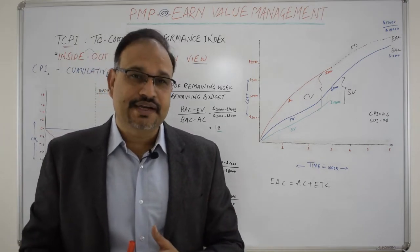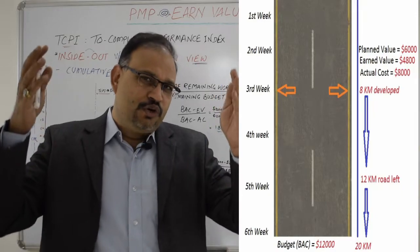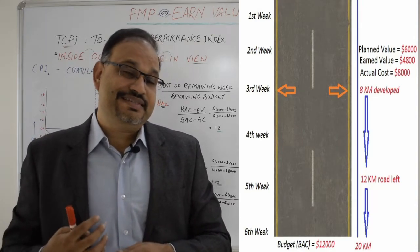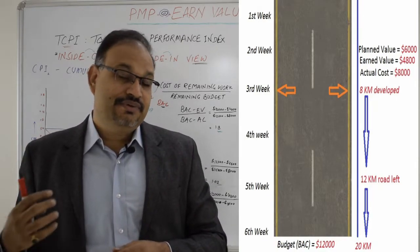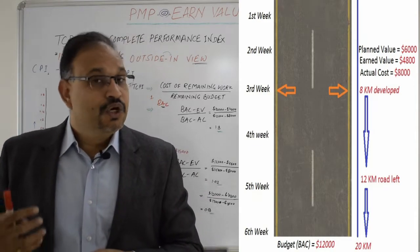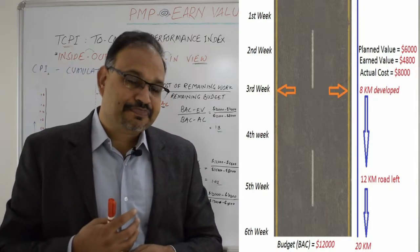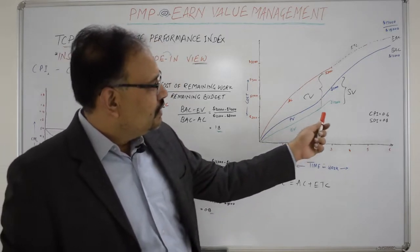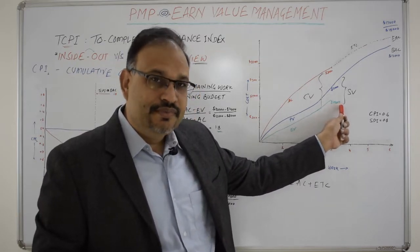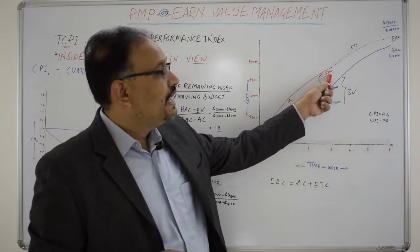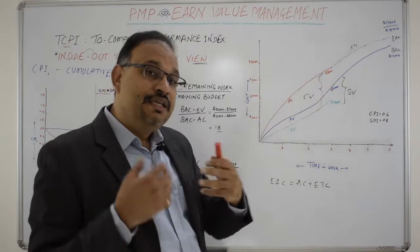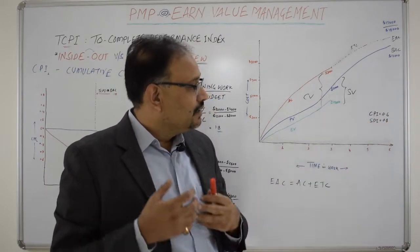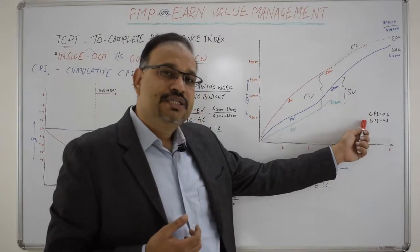As a quick recap: the project wants to build a 20-kilometer stretch of road in six weeks with a budget of $12,000. At the end of week three, the project has only completed 8 kilometers with an actual cost of $8,000, and 12 kilometers still remain. Earned value analysis shows the 8-kilometer stretch translates to an earned value of $4,800 against a planned value of $6,000, with actual cost of $8,000. CPI is 0.6 and SPI is 0.8, showing the project is lagging on both cost and schedule performance.